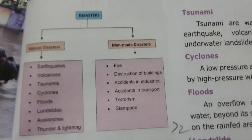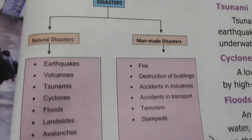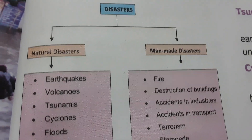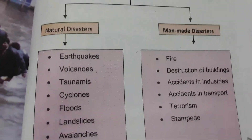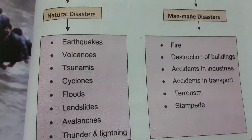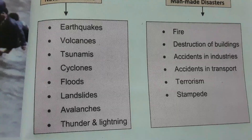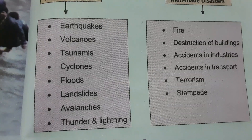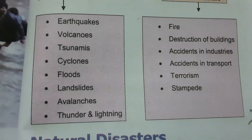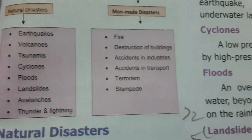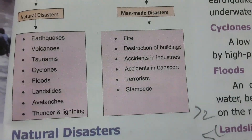Disaster has two types: Natural Disaster and Man-made Disaster. Under Natural Disasters: earthquakes, volcanoes, tsunami, cyclones, floods, landslides, avalanches, and thunder and lightning.